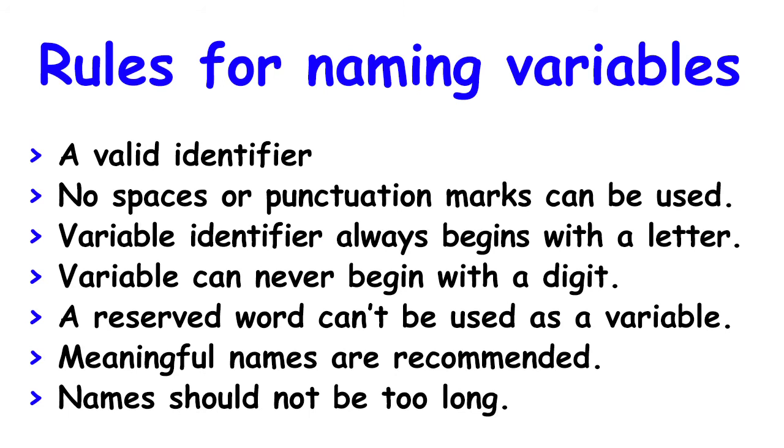Rules for naming variables. A valid identifier. No spaces or punctuation marks can be used. Variable identifier always begins with a letter. Variable can never begin with a digit. A reserved word can't be used as a variable. Meaningful names are recommended. Names should not be too long.